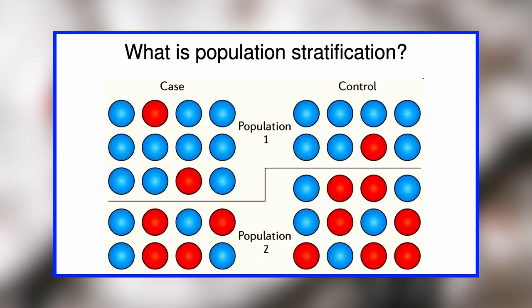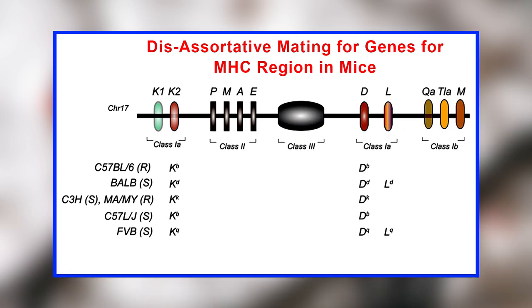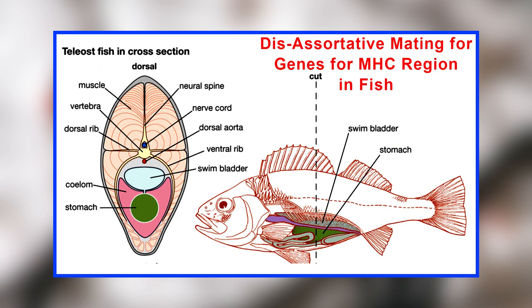However, some researchers argue that this assortative mating is caused purely by population stratification — the fact that people are more likely to marry within ethnic subgroups such as Swedish-Americans. At the same time, individuals display disassortative mating for genes in the major histocompatibility complex region (MHC region) on chromosome 6. Individuals feel more attracted to odors of individuals who are genetically different in this region. This promotes MHC heterozygosity in children, making them less vulnerable to pathogens. Apart from humans, disassortative mating with regard to the MHC coding region has been widely studied in mice and has also been reported to occur in fish.